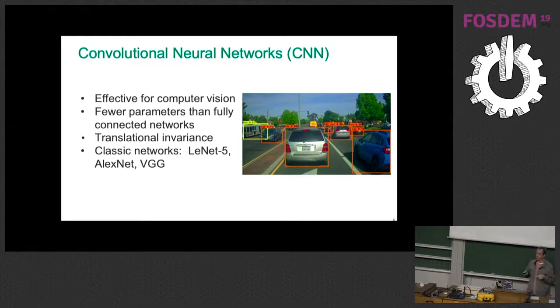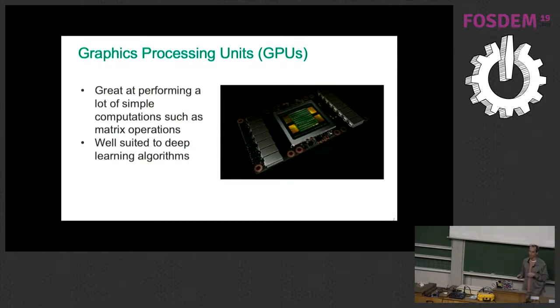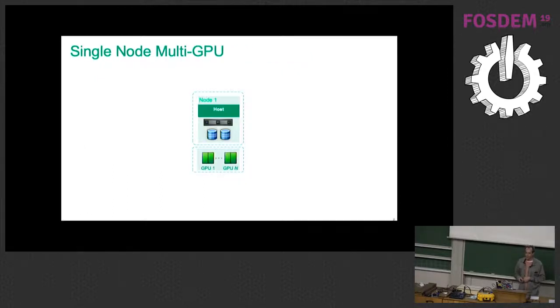Here's a couple examples of classic networks that people use. We've heard about GPUs this afternoon. Neural networks often devolve to doing tons and tons of matrix operations. Graphic processing units are well suited to these algorithms because they do tons and tons of matrix operations in parallel and very quickly. So this is standard infrastructure for running deep neural networks.